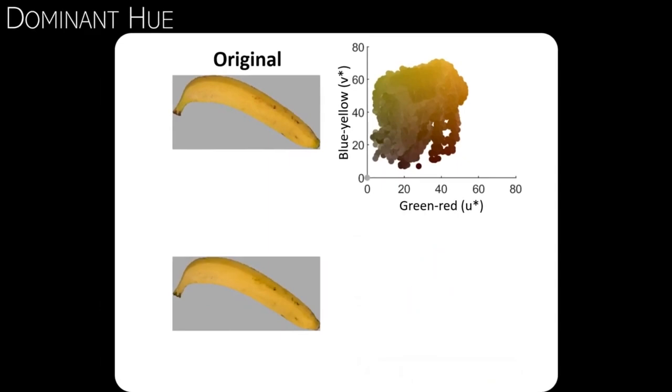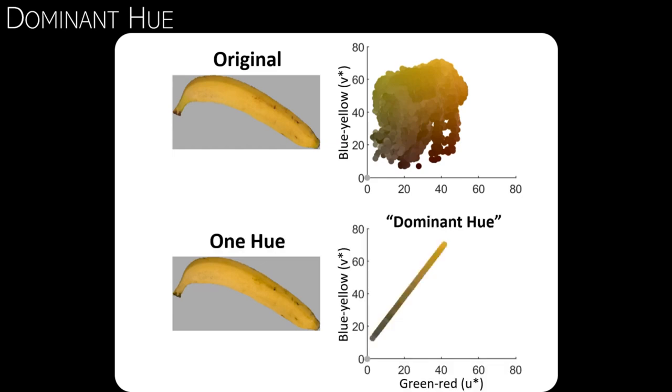We propose that we can reduce the color distribution to a dominant hue. This is illustrated by the image in the second row. The colors of the banana in the second row are manipulated. All the colors in that lower second image lie along a line in color space. To be more precise, actually a plane if you also consider variation in lightness, which is perpendicular to the two chromatic axes.